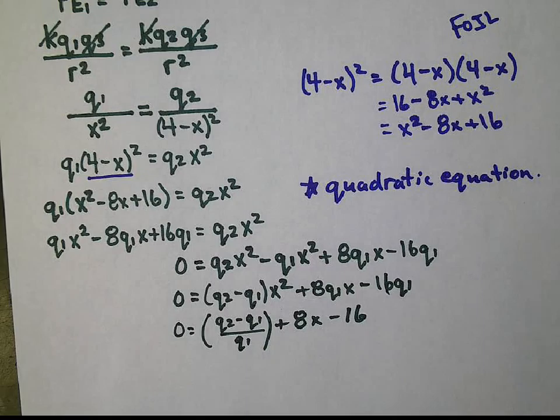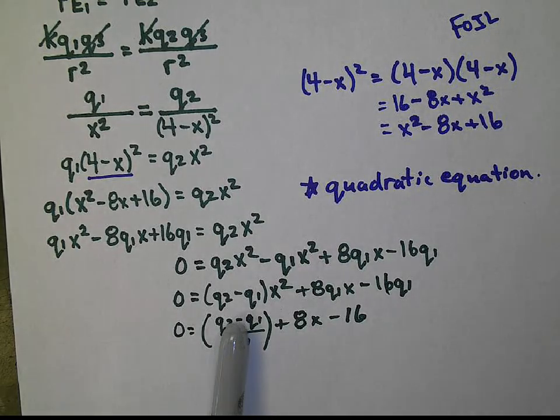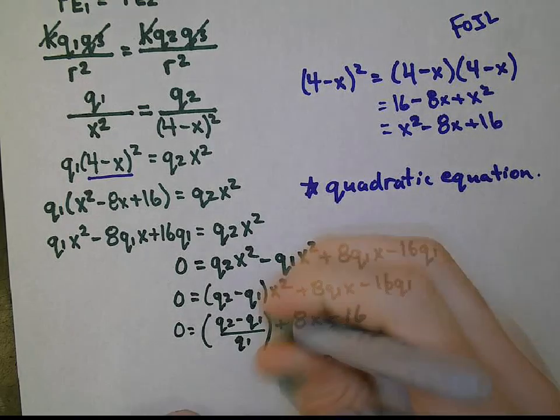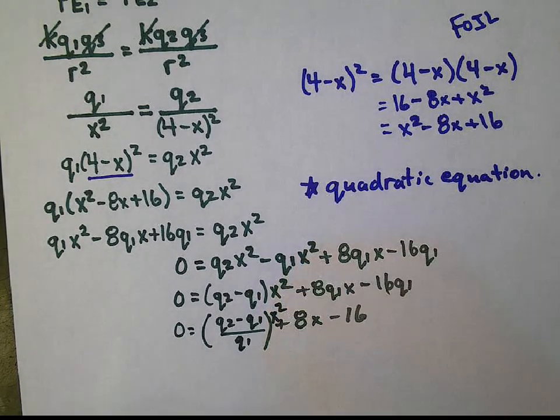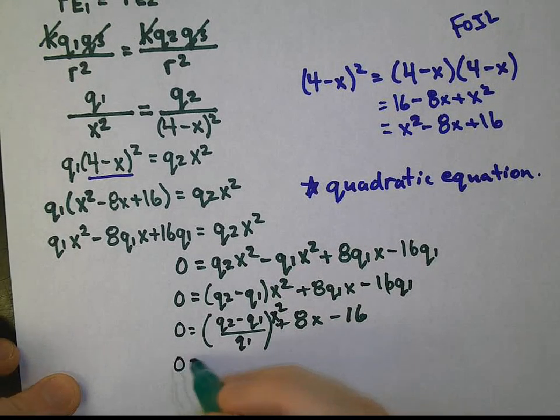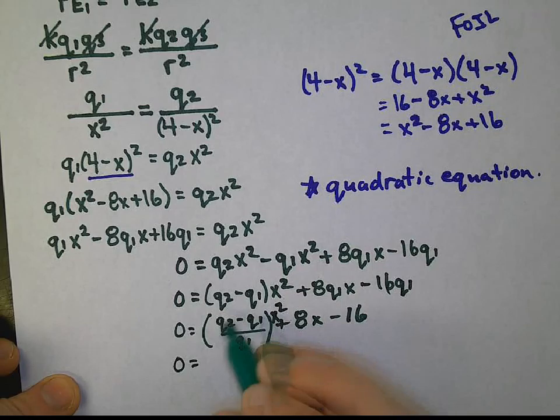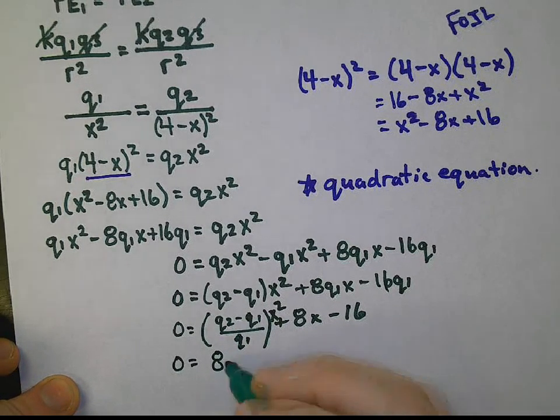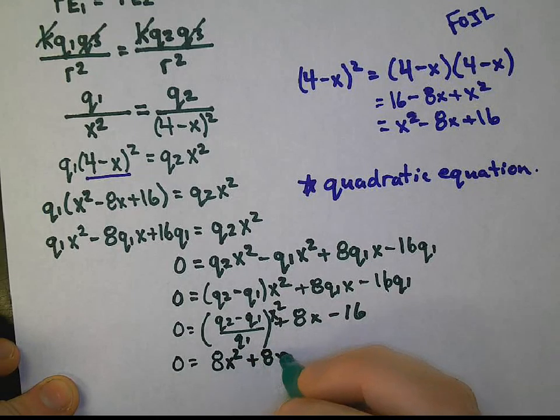Remember before I said we're trying to make this an easy quadratic equation to solve. If we were to substitute right now Q2, Q1, and Q1 for each value here, don't forget that x squared there, what you will end up getting is that this bracket here is actually equal to 8.